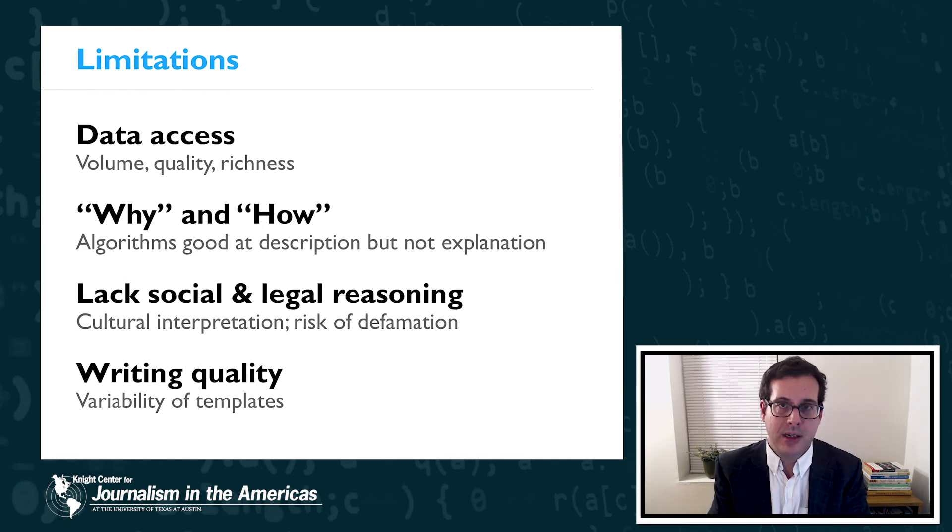Now, because algorithms and automated content systems lack social understanding, areas related to cultural interpretation in journalism, things like writing a theater review, may be particularly difficult for automation to undertake. The lack of legal knowledge by automated writing systems also means that automation could make mistakes that run afoul of legal regulations, like defamation, for instance. So defamation involves making a false statement about a person that causes injury or reputational harm. And the potential is there for algorithmic missteps that could lead to legal liability if the automated writing system were to generate some text that hurt someone's reputation. That's yet another reason perhaps to have humans integrated into the editorial loop so that people are reviewing the content before it's published.